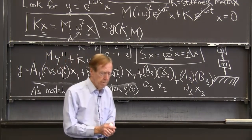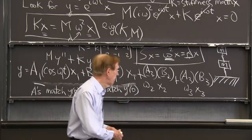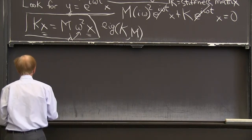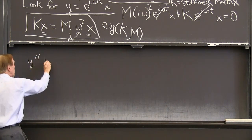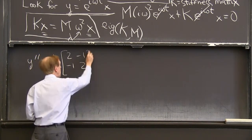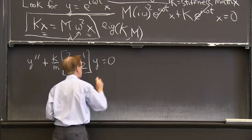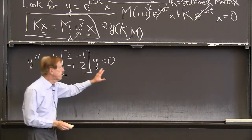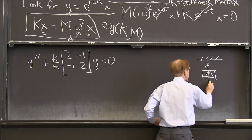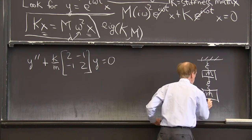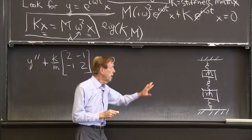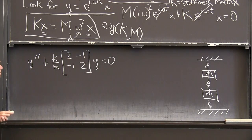Let me end with a particular example. I better go to 2 by 2 for an example. My problem is going to be y double prime plus, there's a k, there's a division by m, and there's a 2 by 2 matrix: 2 minus 1, minus 1, 2, times y equals 0. Now I'm speaking about the problem with a spring, a first mass m, a spring, a second mass m, and a spring. Two equal masses, three equal springs. That's my equation.